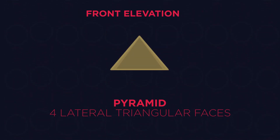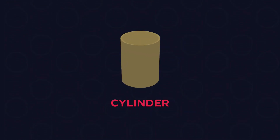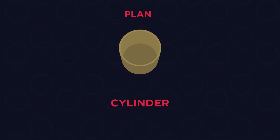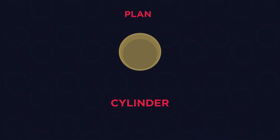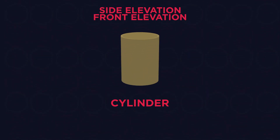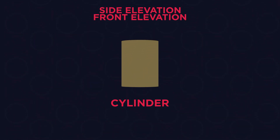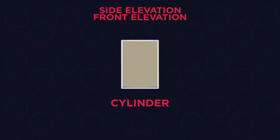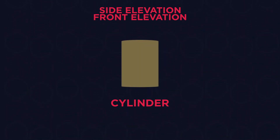Finally, imagine a cylinder standing upright. The plan view would be a circle, which is the flat surface of any cylinder. When we look at the side and front elevation of this upright cylinder, we again get identical rectangles.